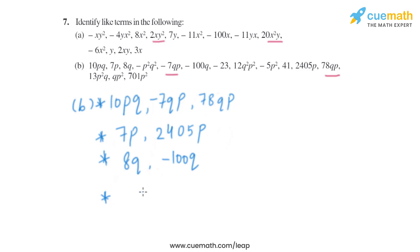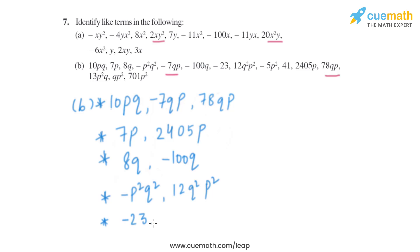The next term is minus P square Q square, with variables P and Q both at power 2. Its like term is 12Q square P square, so they are like terms. Then minus 23 is a constant term, and its like term is 41, so minus 23 and 41 are like terms.